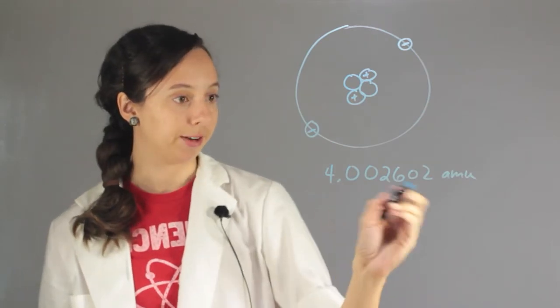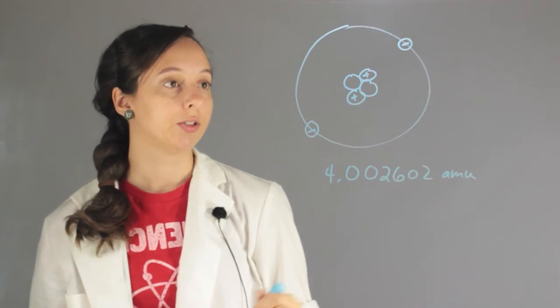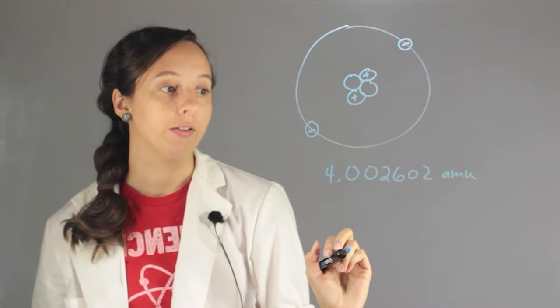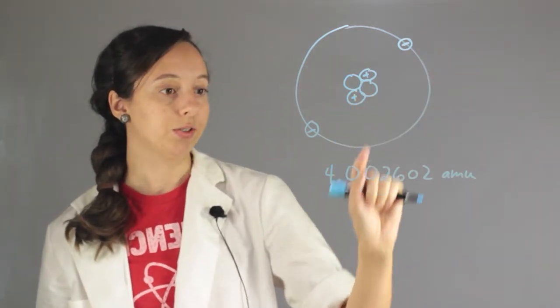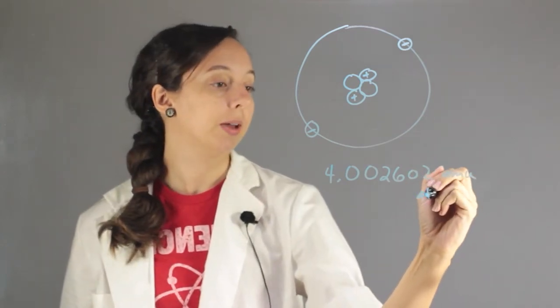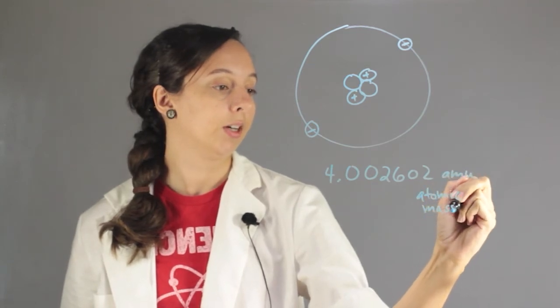So where does this weight come from? Well, most of the weight of an atom comes from the nucleus. So each one of these protons and the neutrons are going to have a weight of about one amu. So that's why, since we have four of these guys, we have about four amu. Amu stands for Atomic Mass Unit.